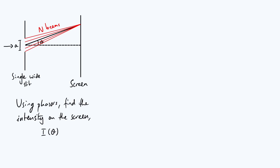Because those n beams all travel different distances — the ones at the bottom travel more than the ones at the top for a given point on the screen — they're all going to arrive at the screen with different phases. They'll combine by the principle of superposition in some complicated way. At some points they'll reinforce each other when all in phase; at other points they'll interfere destructively. A nice way to deal with this is to use phasors, which will be my preferred method.